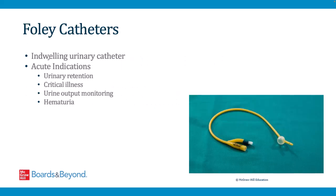A Foley catheter is an indwelling urinary catheter that drains the bladder via a catheter inserted into the urethra. Indications for acute placement include urinary retention, critical illness, urine output monitoring, and hematuria. Some patients have chronic Foley catheters, such as those with chronic obstructions like severe BPH or neurogenic bladder, where patients depend on the catheter to drain their bladder.